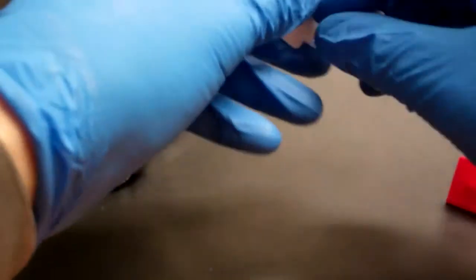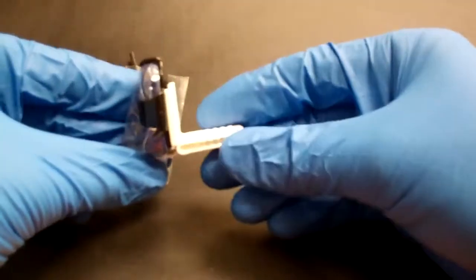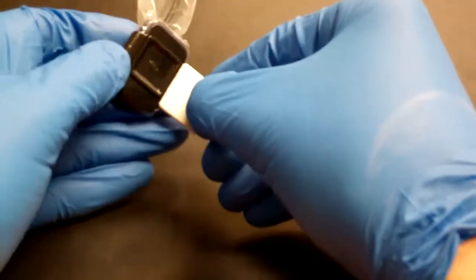And then for our periapical imaging, we use the white bite piece. And it attaches like this for an anterior or from the side for a posterior.